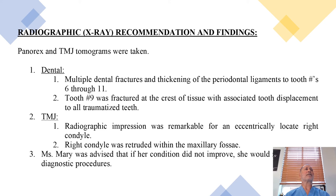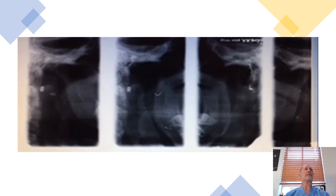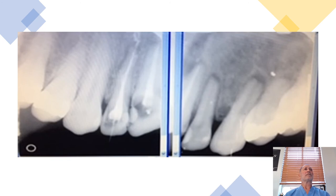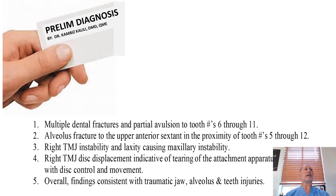Radiographic recommendations and findings: There is an eccentrically located right condyle. The right condyle was retruded within the mandibular fossa. A photogram of the patient compares the right side versus the left side. Some teeth show endodontic treatment passing the apex on the lateral incisor, and other teeth have periapical peridontal lucency. Preliminary diagnosis: multiple fractures, alveolus fracture, right TMJ instability — overall finding consistent with traumatic jaw, alveolus, and teeth injuries.